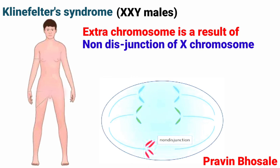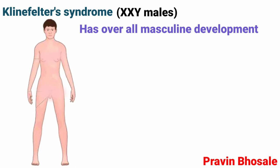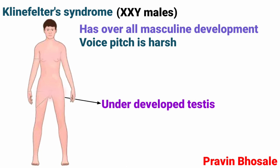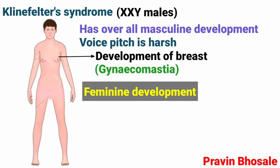The individual is male and has overall masculine development, but with a harsh voice pitch and underdeveloped testes. They are tall with long arms. Feminine development includes gynecomastia (development of breasts) and no spermatogenesis, making these individuals sterile.